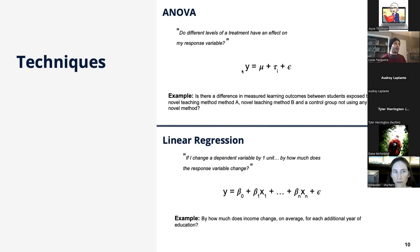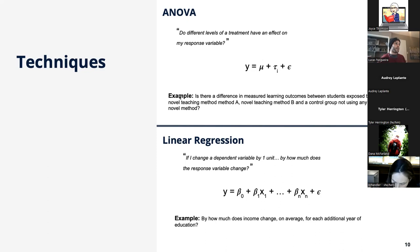ANOVA: I take my variable of interest, take the average in two groups as my baseline, then see what is the effect of my intervention — represented by tau — to see if it is statistically significant. Is there any tau in the population? Is this thing making a difference? For example: is there a difference in measured learning outcomes between students exposed to novel teaching method A, novel teaching method B, and a control group not using any novel method?